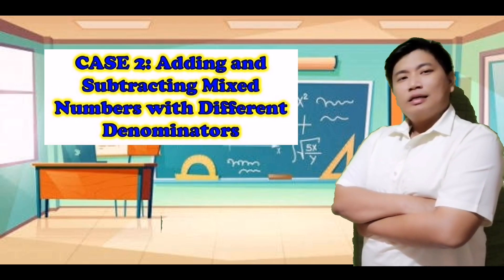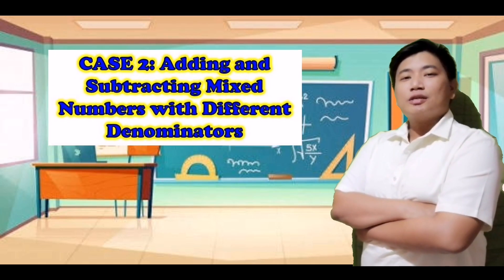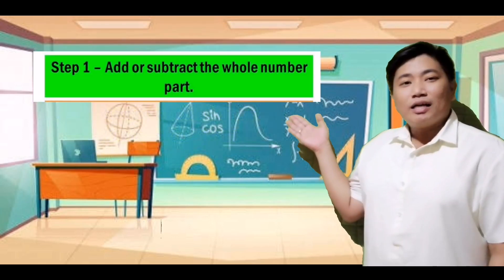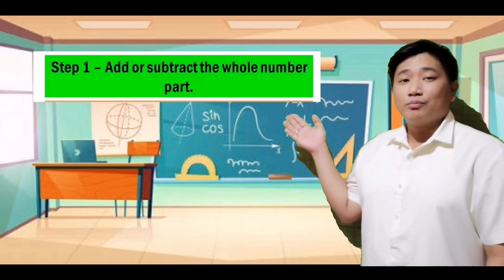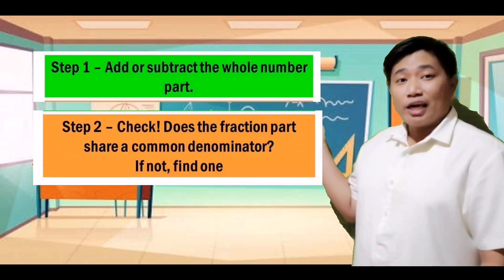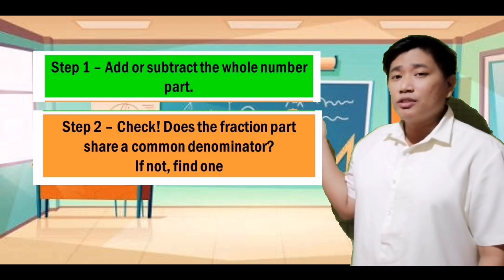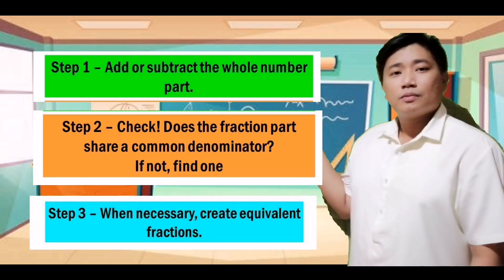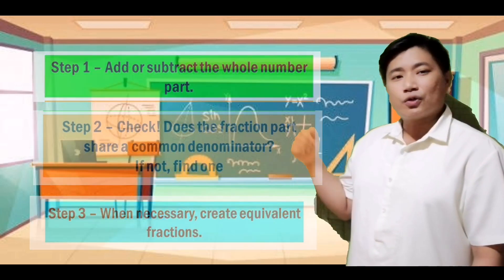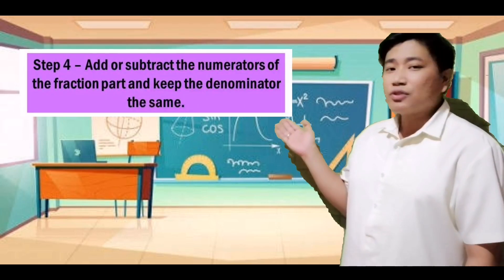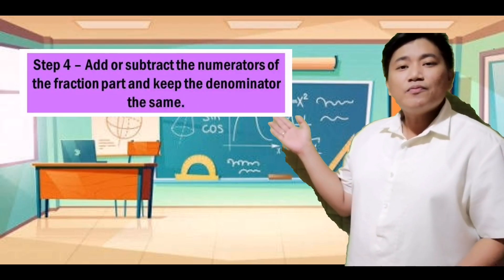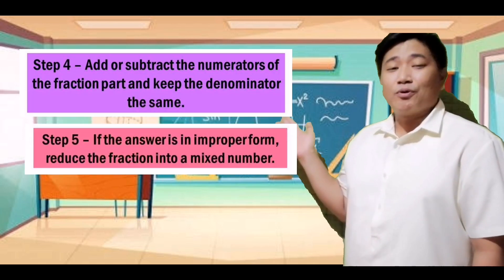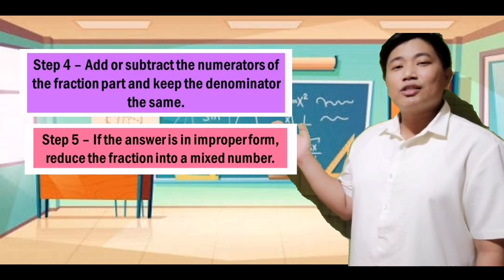Case number 2: Adding and subtracting mixed numbers with different denominators. Here are the steps. Step number 1: Add or subtract the whole number part. Step number 2: Check — does the fraction part share a common denominator? If not, find one. Step number 3: When necessary, create equivalent fractions. Step number 4: Add or subtract the numerators of the fraction part and keep the denominators the same. Step number 5: If the answer is an improper fraction, reduce the fraction into a mixed number.